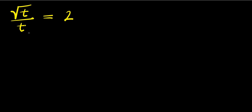Hello, how to solve this radical problem: square root of t divided by t equals 2. We are solving for values of t that satisfy this equation, so t is over one. We are going to make use of two different methods.